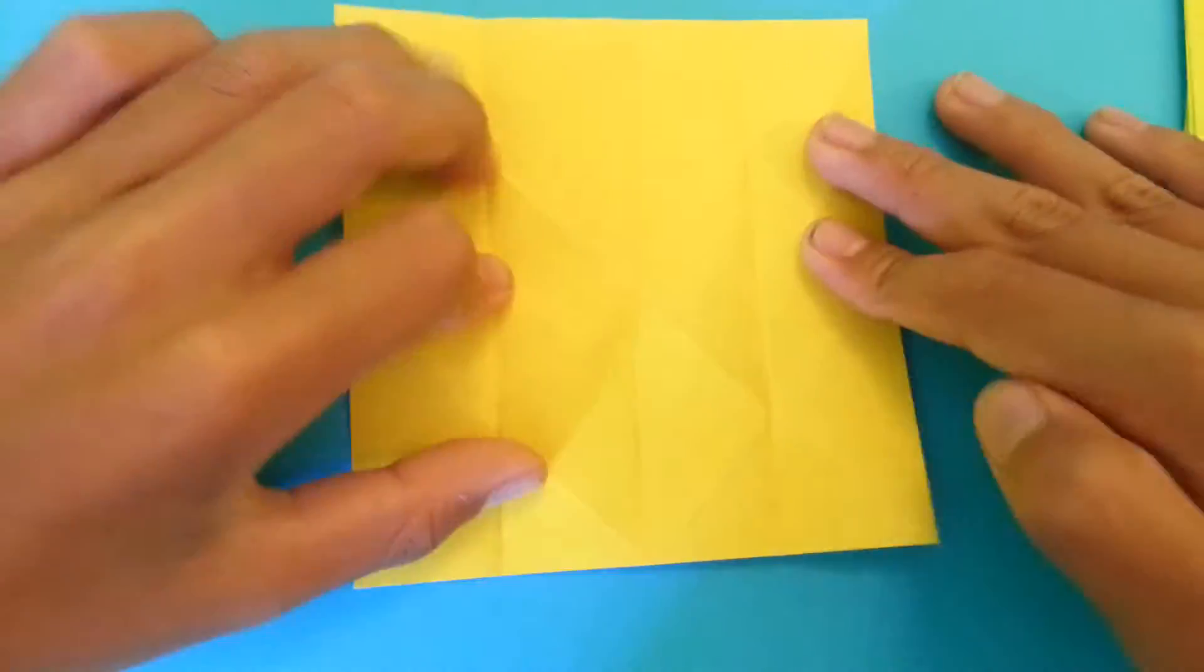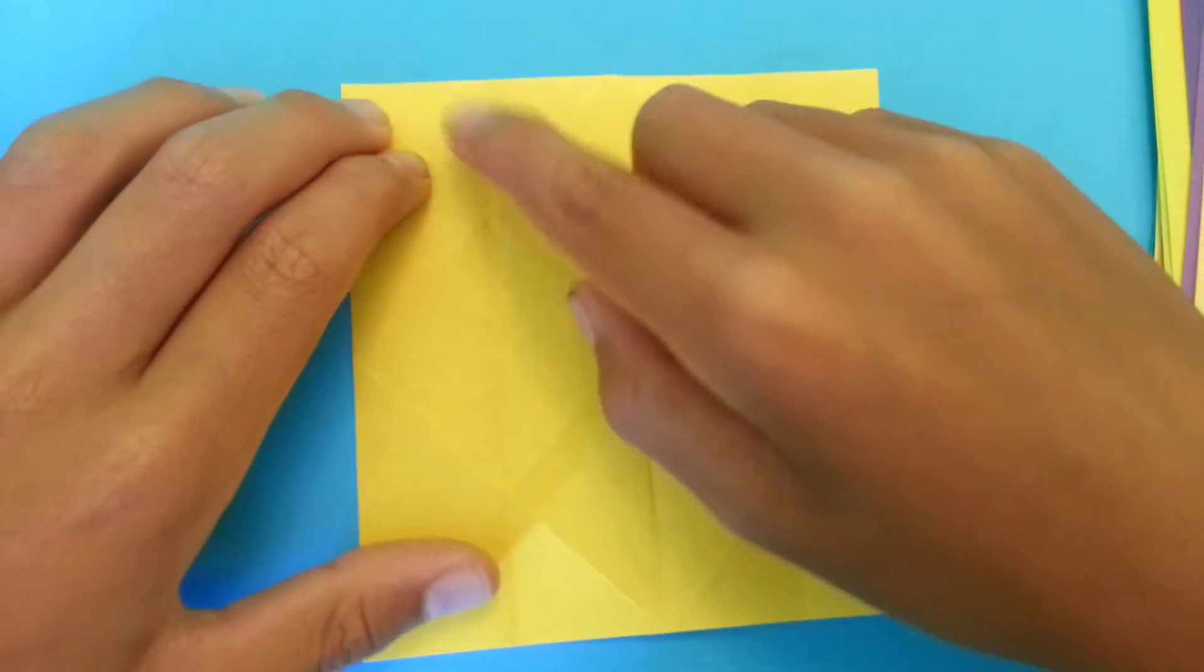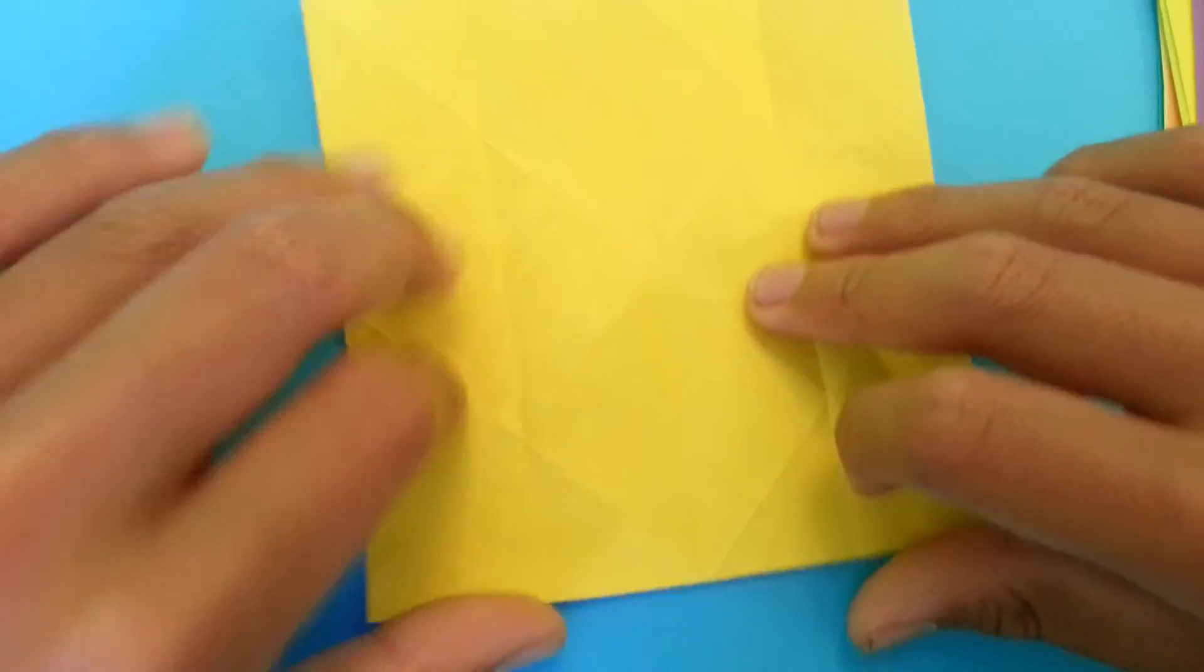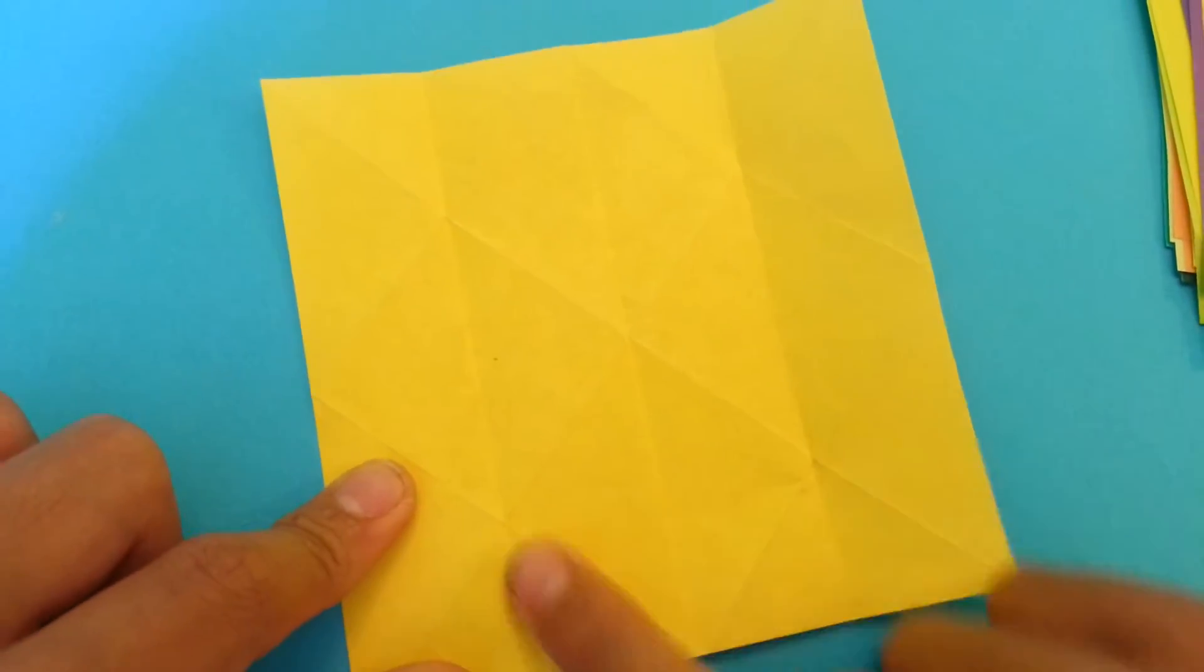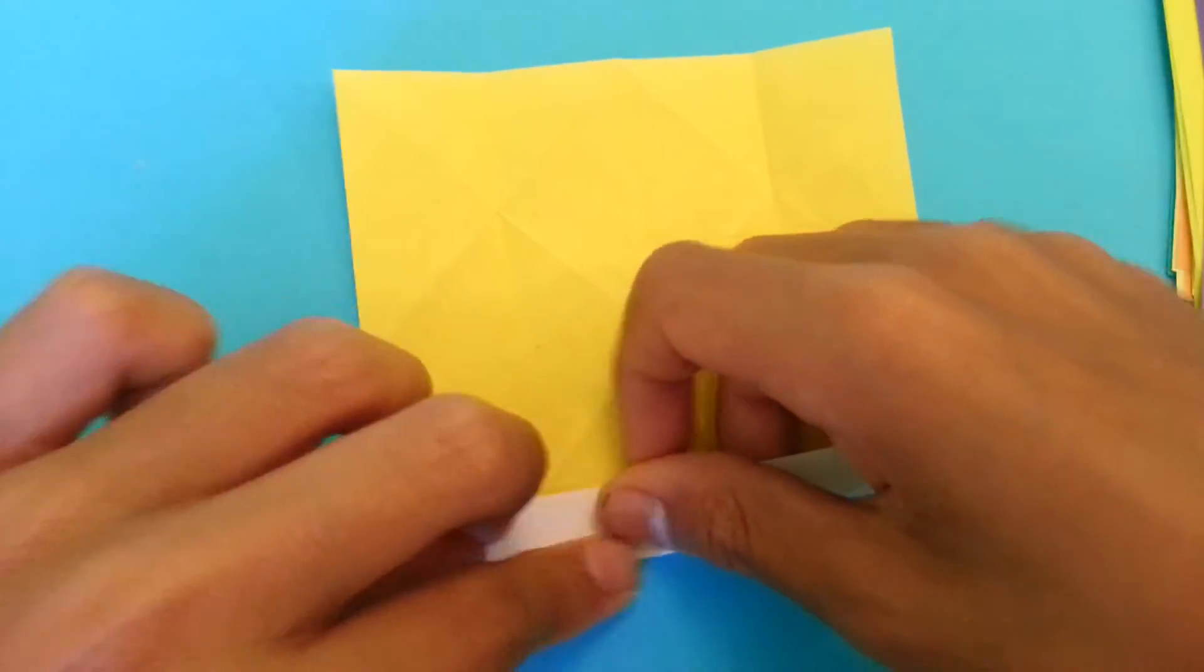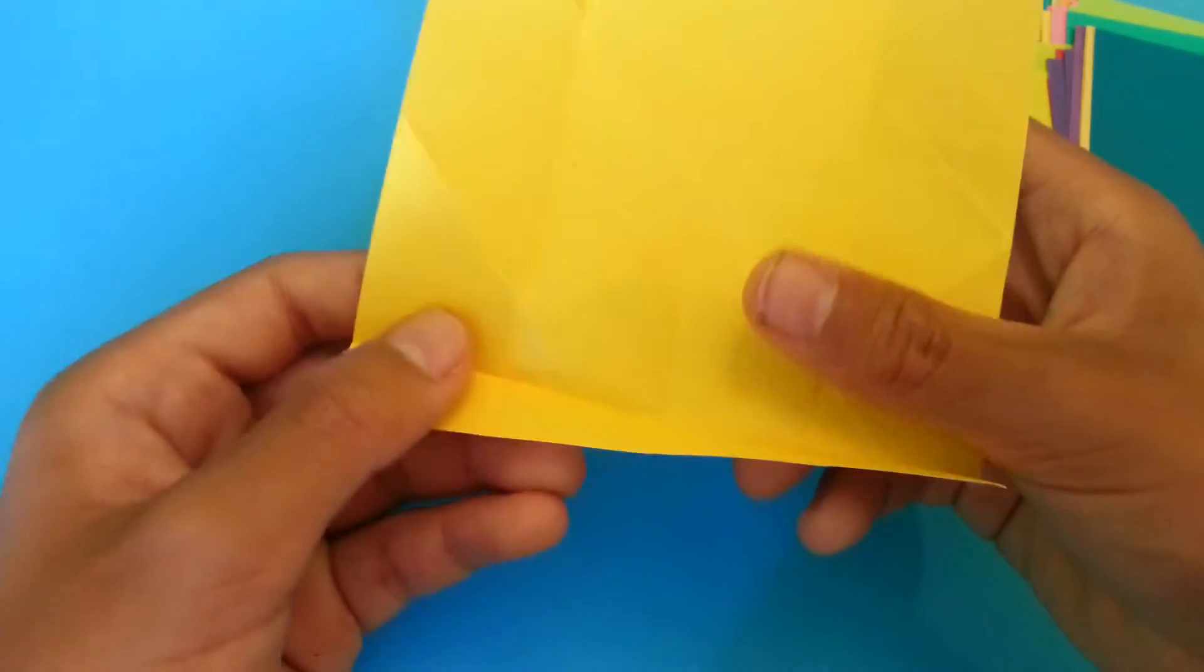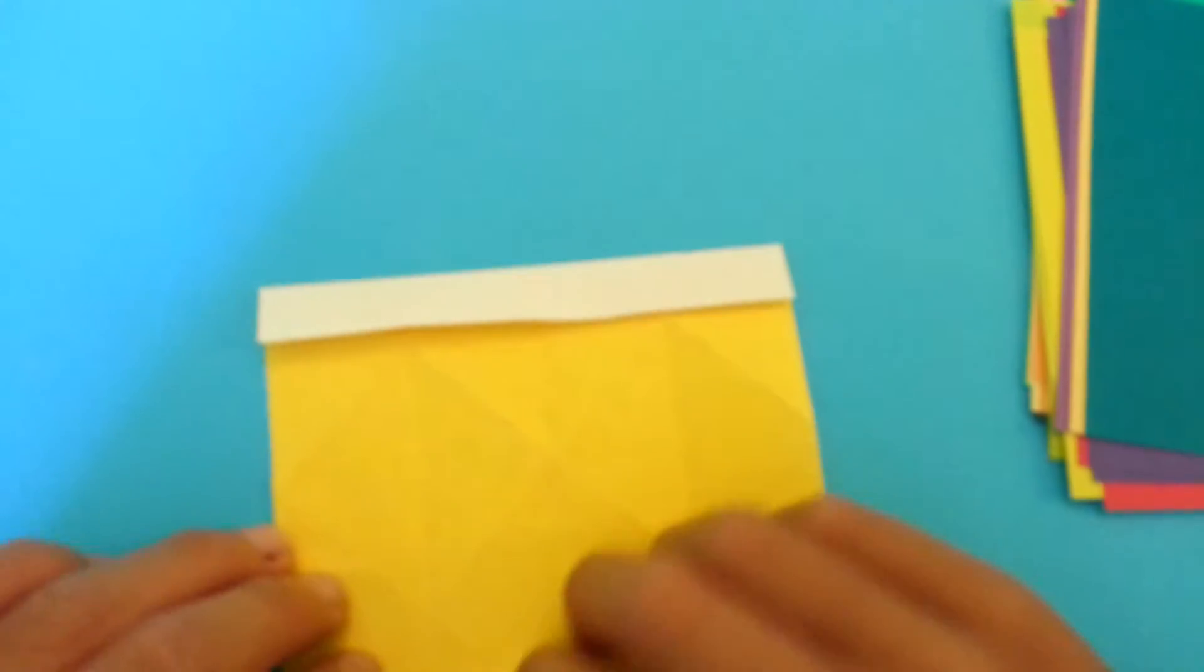Now you're going to rotate the paper about 45 degrees so that these creases that we fold to the center are facing vertically. Fold this flap up to this intersection. Fold the crease up to the intersection here. Rotate it and do the same thing.